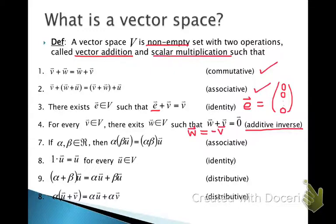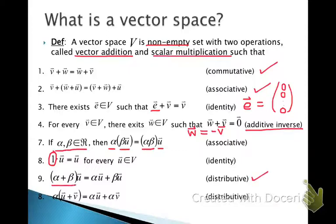Here are some properties when dealing with scalars. Alpha and beta are just any real number. There is associativity with scalars — I can multiply a vector by one scalar and then multiply that product by alpha, or I can multiply the scalars together first and then multiply by the vector. There is a scalar identity, which is just the number 1, so multiplying 1 by any vector returns the vector. And there is a distributive property over the sum of two scalars or over the sum of two vectors.